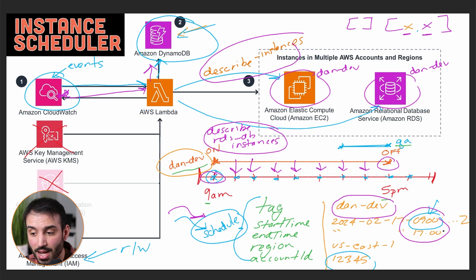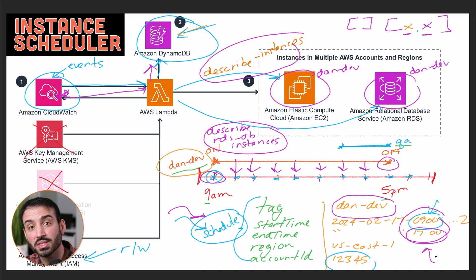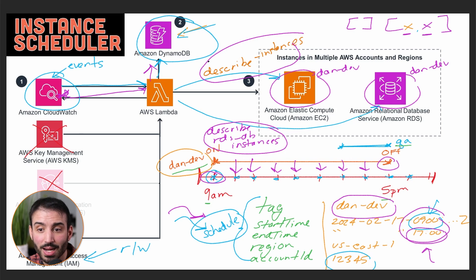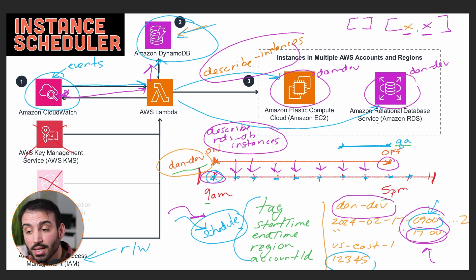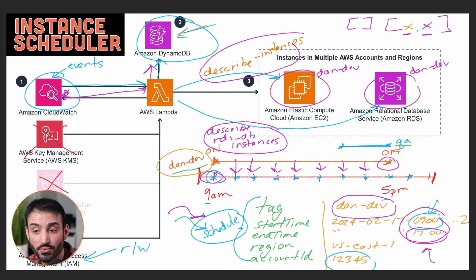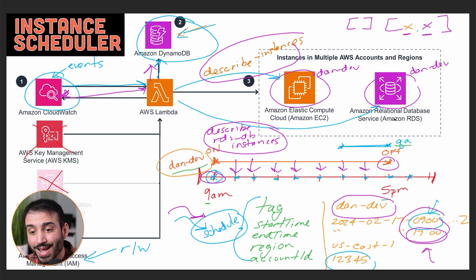At 5 p.m., the Lambda does the same operation but recognizes it's now the end time for the 'dan-dev' schedule. It describes the EC2 and RDS instances, finds them both in running state, and this time calls the terminate API to stop or terminate those instances, returning them to off mode.